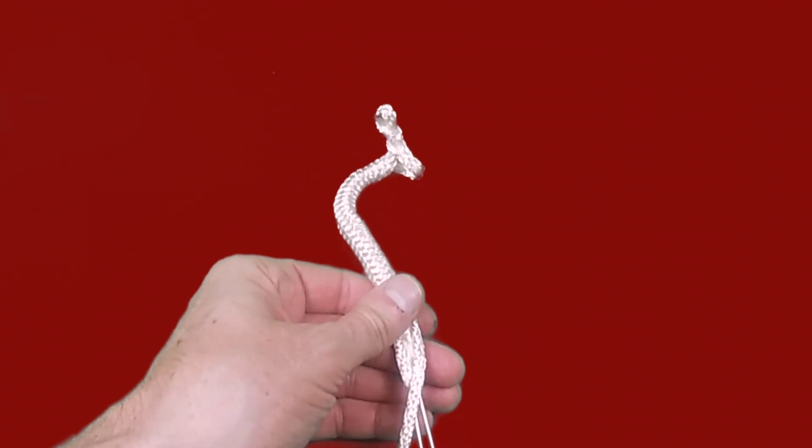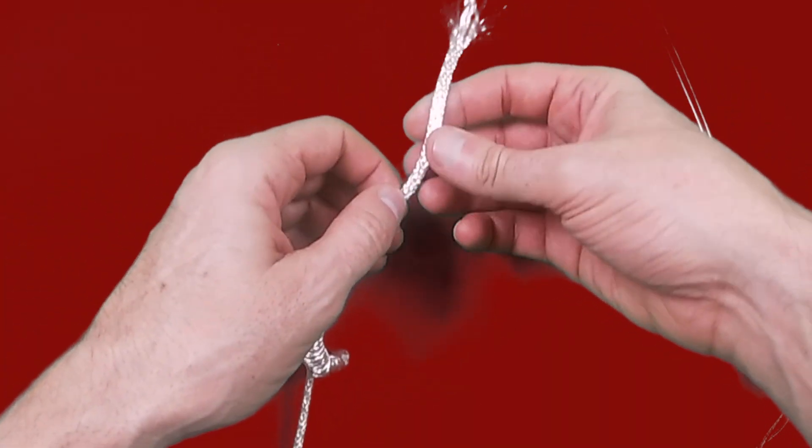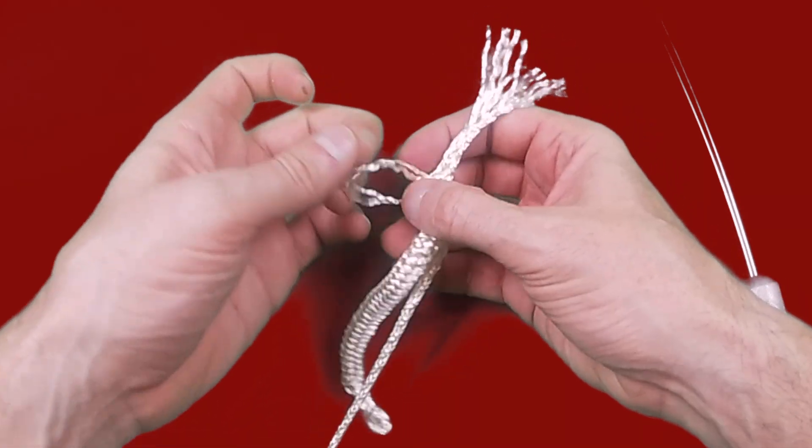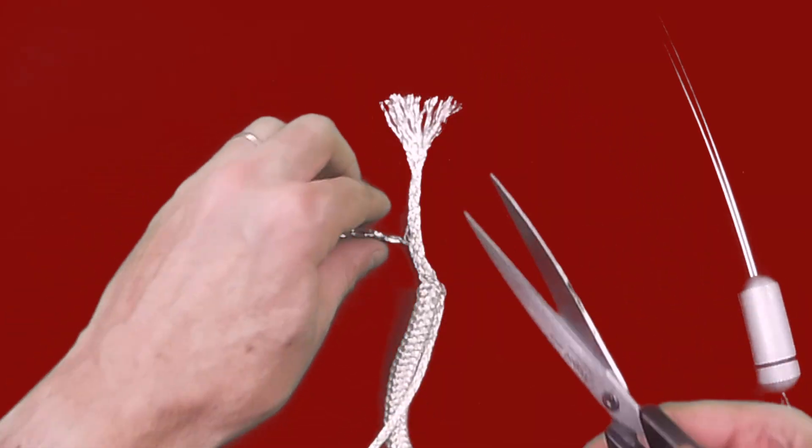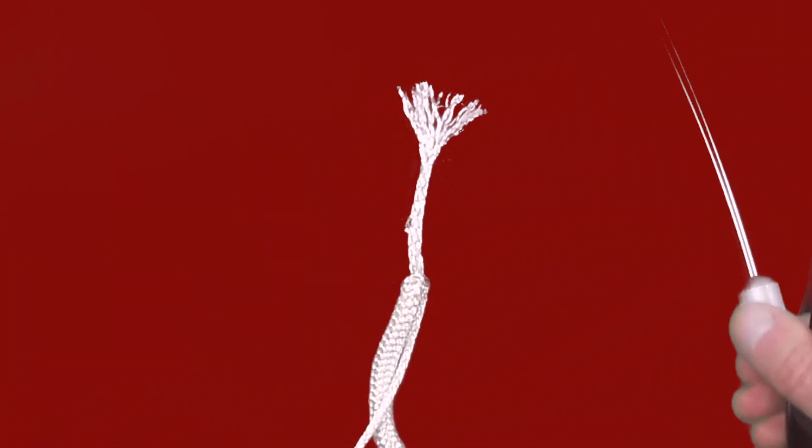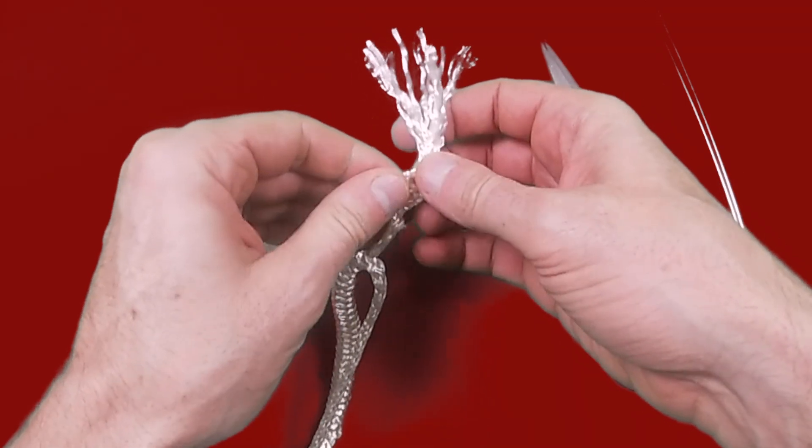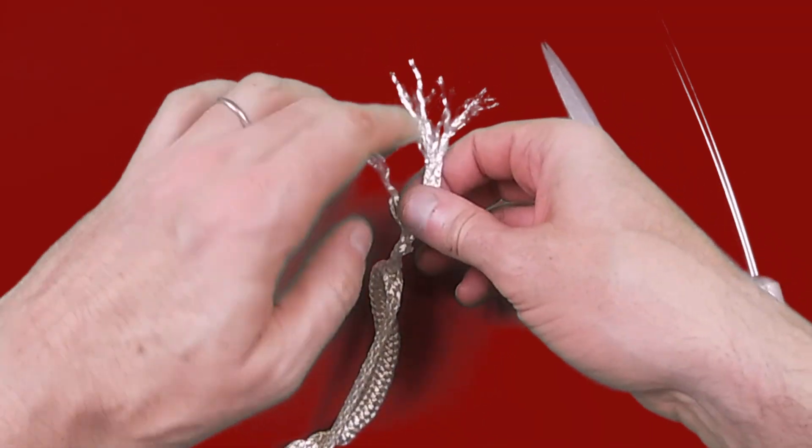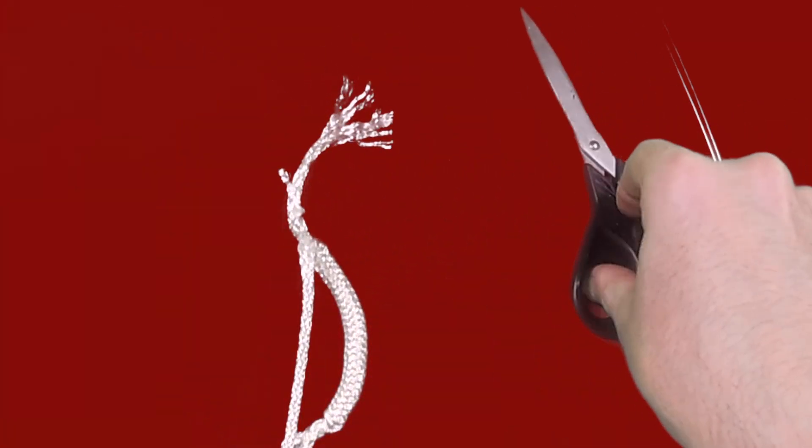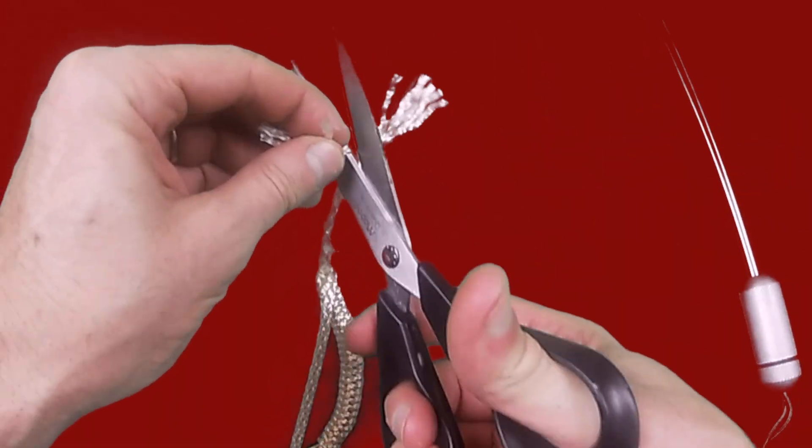To taper the tail you want to pull it through 5 or 6 centimeters and then grab 2 or 3 strands of the tail, snipping them off. Then work your way up a couple more centimeters removing a couple more strands and repeat until you get to the top of the tail.